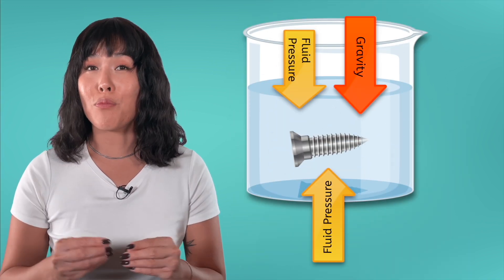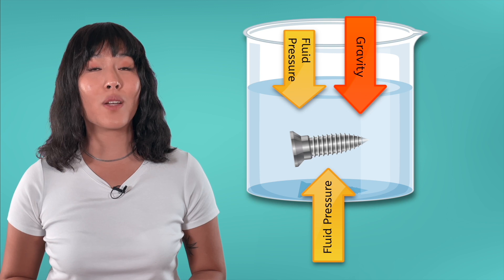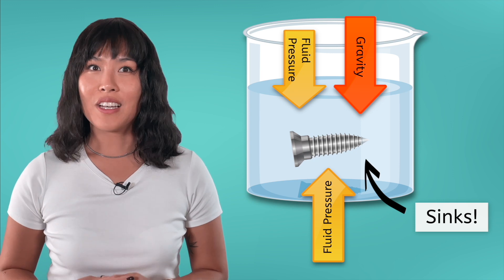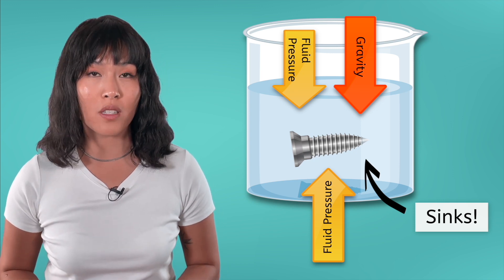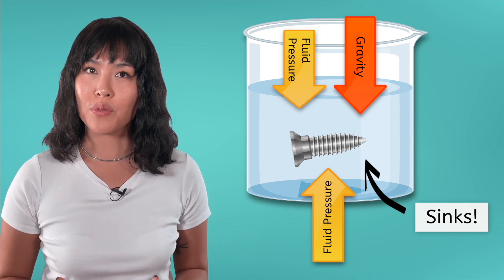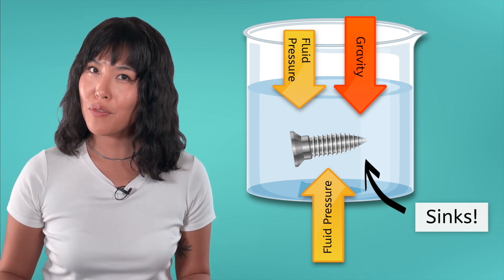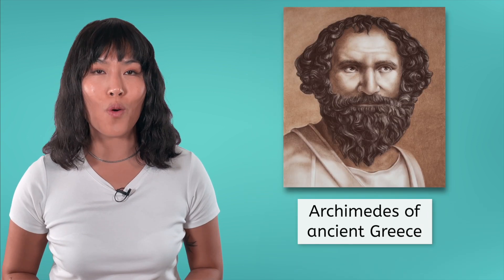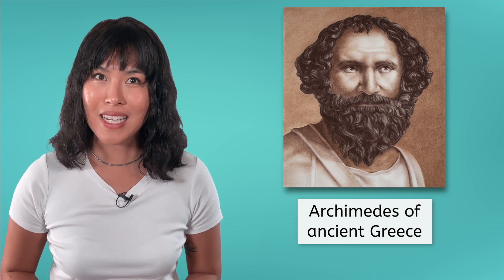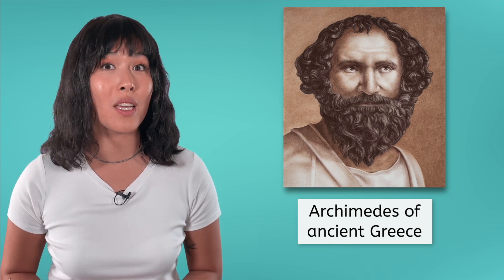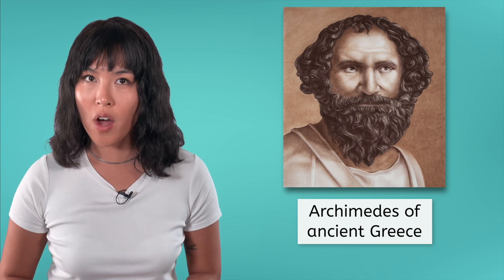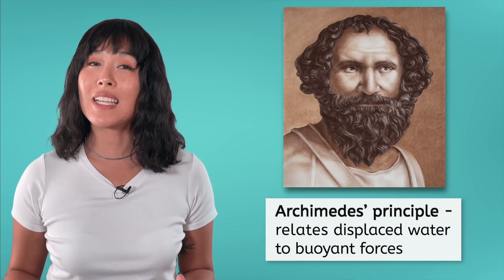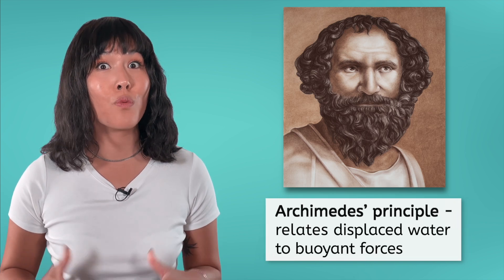In the case of our metal screw, the force from gravity will tip the scale in favor of the downward forces, and it will sink. So the magnitude of the buoyant force determines whether an object sinks or floats. This mystery was actually solved over 2,000 years ago in ancient Greece by the scientist Archimedes. Even in ancient times, it was no secret that when an object is placed in water, it takes up space that the water previously filled. Archimedes' principle explains how this displaced water relates to buoyancy.